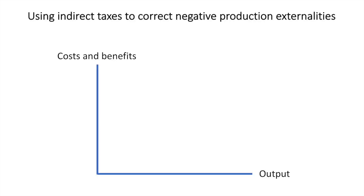You've learned this diagram earlier in the start of A2. If you need a refresher, I'll include the link in the video description. This diagram illustrates a negative production externality.